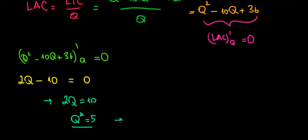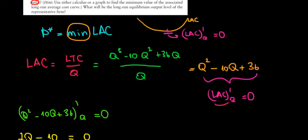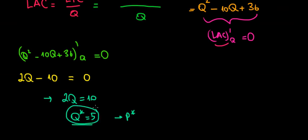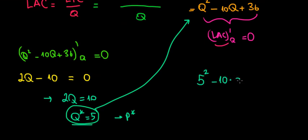With Q = 5, we can now find the equilibrium price. We substitute the quantity that minimizes the long-run average cost into the LRAC function, because that minimum coincides with the long-run equilibrium price. Substituting Q = 5, we get 5² minus 10 times 5 plus 36.